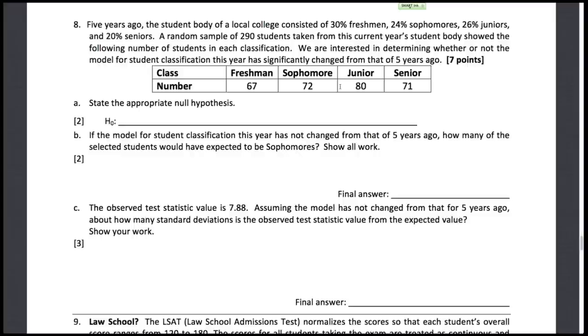In this question we're trying to see how well a set of probabilities given by 30% freshmen, 24% sophomores, 26% juniors, 20% seniors represents our data. We're interested in determining whether or not the model has significantly changed from five years ago. We've collected data from now and we have a model from five years ago.